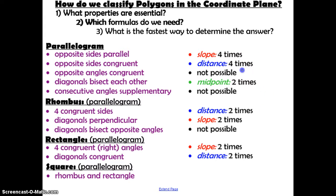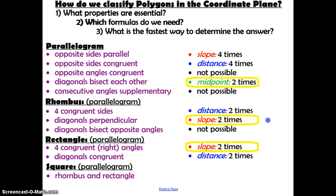Some properties are not testable in the coordinate plane — all of the ones dealing with angles that are not right angles: opposite angles congruent, consecutive angles supplementary, and diagonals bisecting opposite angles. Those we can't calculate on the coordinate plane. The last question to ask yourself is what is the fastest way to determine the answer. When proving a parallelogram, using the midpoint formula twice shows that the diagonals bisect each other — that's fastest. For a rhombus, calculating slope twice to determine whether the diagonals are perpendicular is fastest. For a rectangle, calculating slope twice to determine whether the four angles are all congruent right angles is fastest.